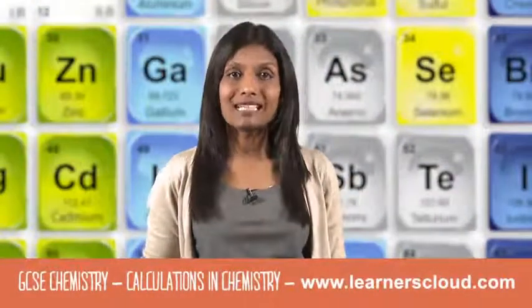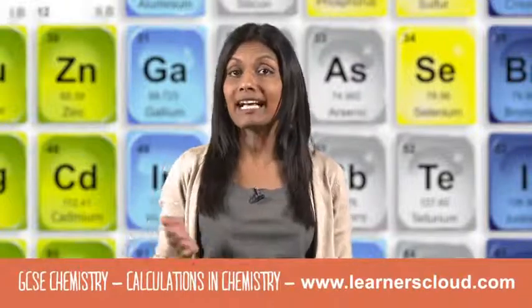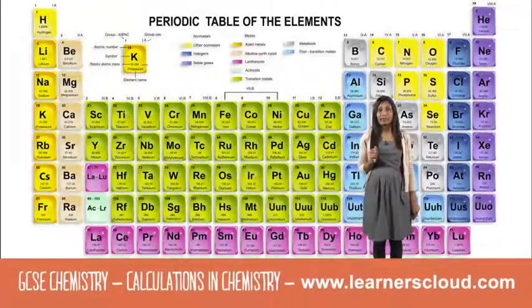So you can always find the relative atomic mass, or RAM, of an element by looking at the mass number in the periodic table.